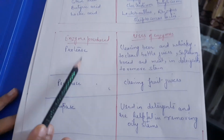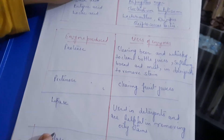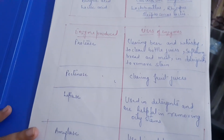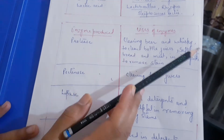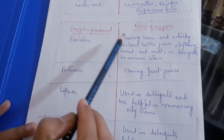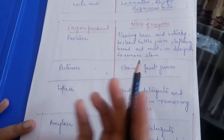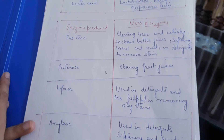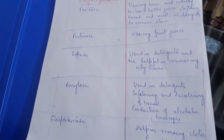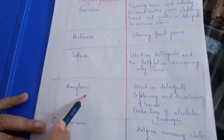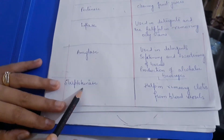Enzymes are also produced industrially using microorganisms. Protease is used to clarify beer and whiskey, to soften bread and meat, and is added to detergents to remove stains. Pectinase is used to clarify fruit juices. Lipase is used in detergents to remove fatty stains (daag). Amylase is used in detergents, for softening and sweetening of bread, and in production of alcoholic beverages.